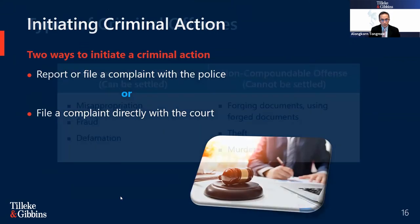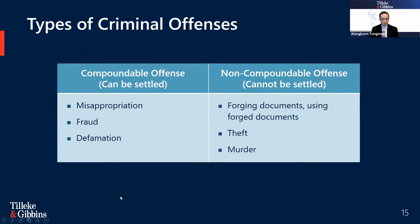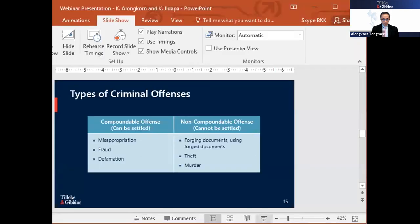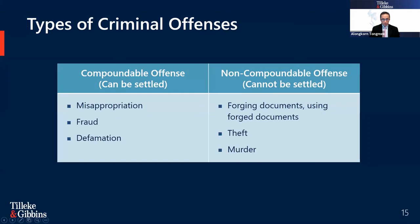Now let's talk about criminal action in Thailand. There are two types of criminal offenses: compoundable offenses and non-compoundable offenses. A compoundable offense is a criminal offense that can be officially settled — this includes misappropriation, fraud, and defamation. Once the party settles the case, for example the offender pays compensation to the injured person, the injured person's right to pursue the case is extinguished. A non-compoundable offense, also called a public offense, means a criminal offense where the state is the injured person, so it cannot be officially settled. Examples include forging documents, death, and murder.